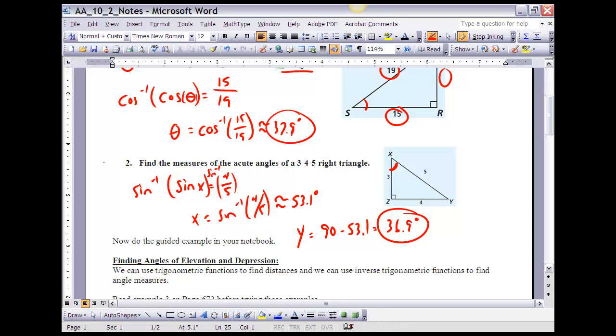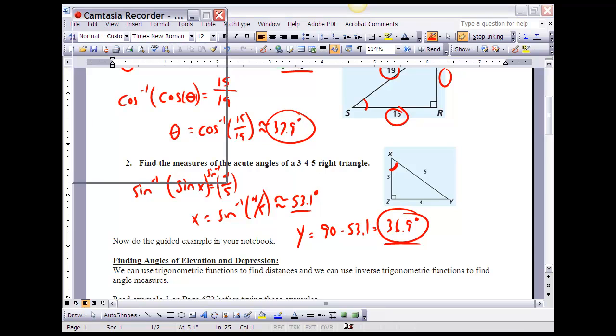Now, we could use trigonometry to find angle y, but we don't need to, because I know that all three angles of a right triangle have to add up to 180 degrees. Since angle z is 90 degrees, that leaves only 90 left over. If 53.1 degrees is x, then y would have to be 90 minus 53.1, or 36.9 degrees. So, we found the three angles of that right triangle there.